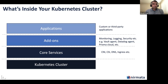Typically when you look at a Kubernetes cluster, beyond the control plane, there are a few different types of applications or components that are part of your cluster. At the minimum, you need some required core services — these tend to be your CNI plugin, your CSI for storage, DNS if you're running CoreDNS, and ingress, whether it's HAProxy, Nginx, or any other ingress.